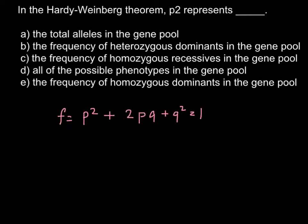In this formula, p-squared means homozygous dominant — we can say capital A, capital A. 2pq stands for the heterozygous — capital A, small a. And q-squared stands for the homozygous recessive — small a, small a.